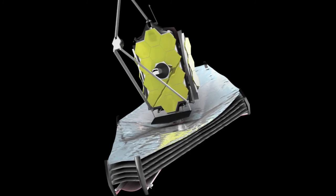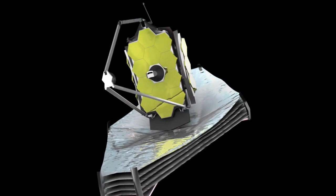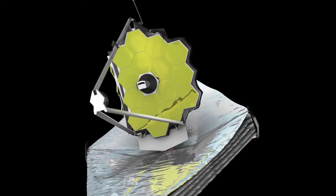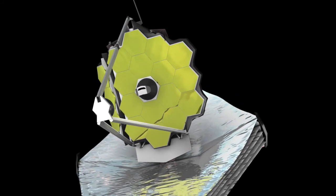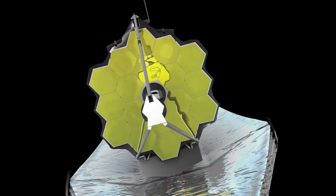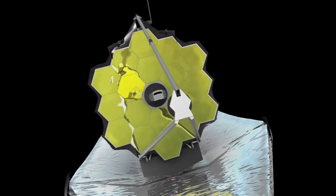The James Webb Space Telescope mirror is designed to resolve the faintest detail possible for its size when observing near-infrared wavelengths. The hexagonal segments of the mirror will be movable to allow for fine-tuning of the images in orbit.